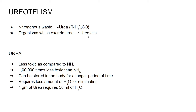The nitrogenous waste here is urea. Now, what are the advantages of excretion of urea over ammonia? The first advantage is that urea is less toxic as compared to ammonia — one lakh times less toxic than ammonia.